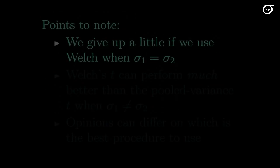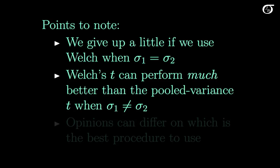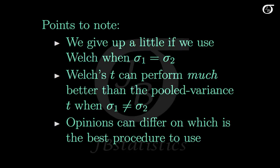The lessons to be learned: we give up a little if we use the Welch procedure when the population standard deviations are actually equal, but the Welch t-procedure can perform much better than the pooled variance procedure when that equal variance assumption is violated. A lot of times there's a real grey area about which procedure is best to use — opinions can differ, and very good statisticians could argue both sides in certain cases.